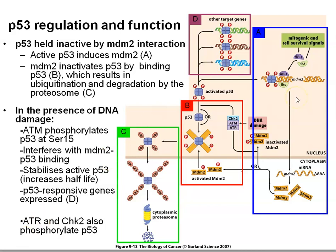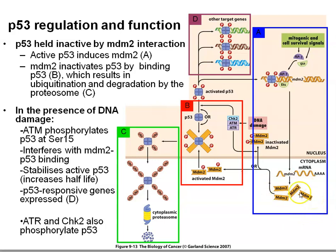There's an additional gene that p53 activates, which is the MDM2 gene. The MDM2 gene codes for MDM2 protein, and MDM2 protein is what we call an E3 ubiquitin ligase. The job of an E3 ubiquitin ligase is to bind to a specific protein — in this case p53 in its unphosphorylated form.